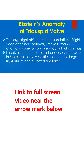The large right atrium and an association of right-sided accessory pathways make Ebstein's anomaly prone to supraventricular tachycardias. Localization and ablation of accessory pathways in Ebstein's anomaly is difficult due to the large right atrium.